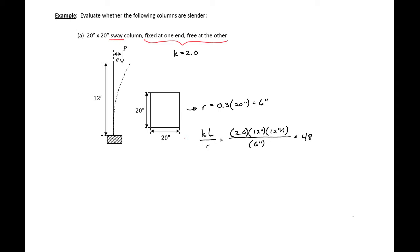Our ACI limit for sway columns is 22. Since our kL/r of 48 is greater than that limit, we need to consider slenderness.